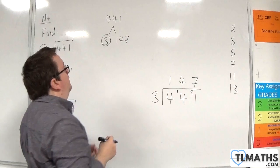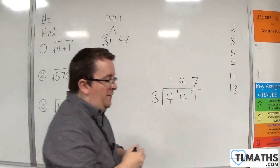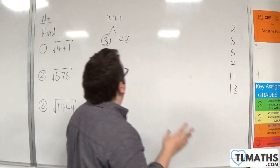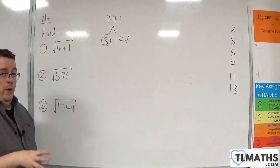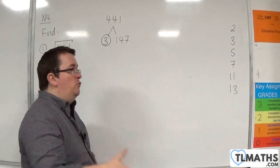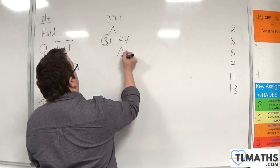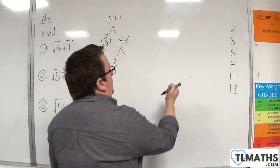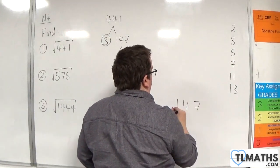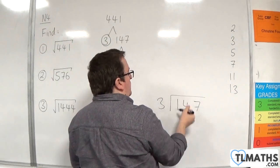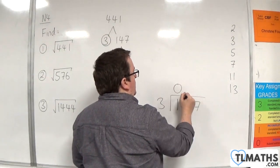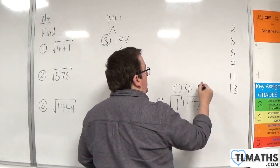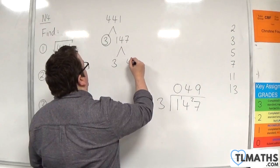3 is prime. Now 147 is not prime because 1 plus 4 plus 7 is 12, which is divisible by 3. So 147 is divisible by 3. 147 divided by 3: 3s into 1 can't go, remainder 1; 3s into 14 go 4 with 2 remainder; 3s into 27 go 9. So that gives us 49.